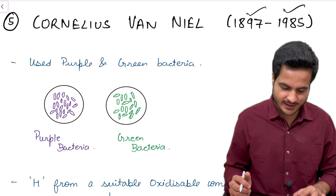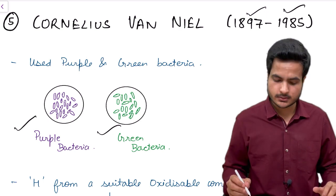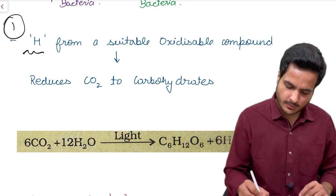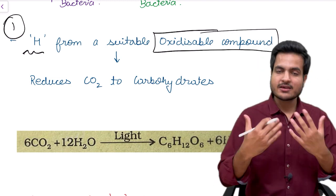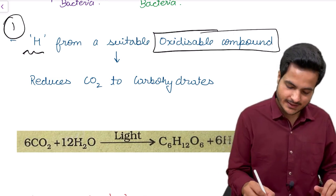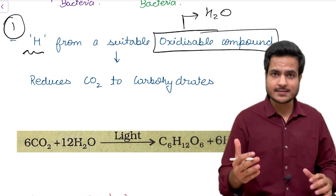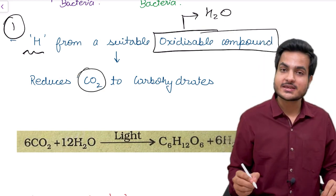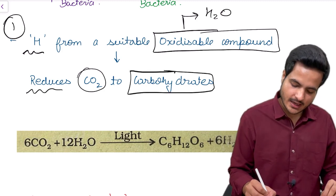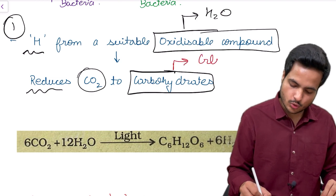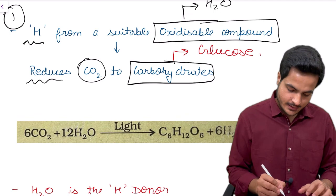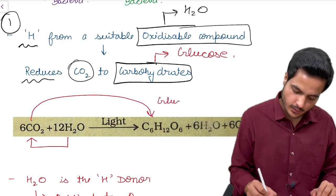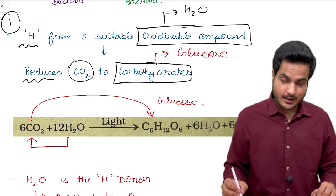He used two colonies of bacteria, one was purple colored bacteria and the other one was green colored bacteria. And he gave the most interesting statement. His statement stated that hydrogen from an oxidizable compound, any compound which can easily give its hydrogen atom is called as oxidizable compound. So here in this reaction of photosynthesis, water will act as an oxidizable compound as it will easily give its hydrogen atom. Now who will receive this hydrogen atom? Carbon dioxide will receive hydrogen atom and would be reduced to carbohydrates. And this carbohydrate in our reaction is none other than glucose. So he said that the hydrogen from water, the oxidizable compound, would reduce carbon dioxide into a carbohydrate which we know is glucose in our reaction.